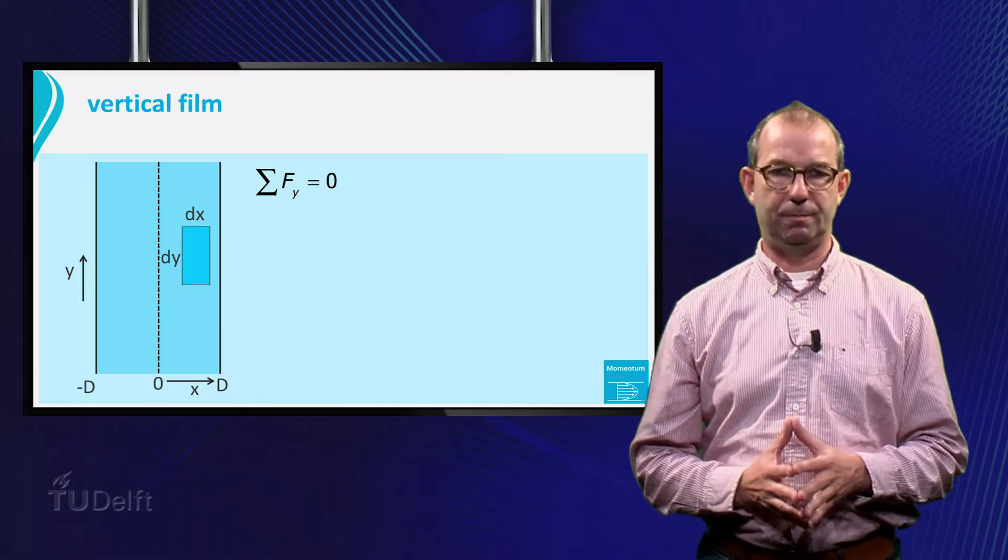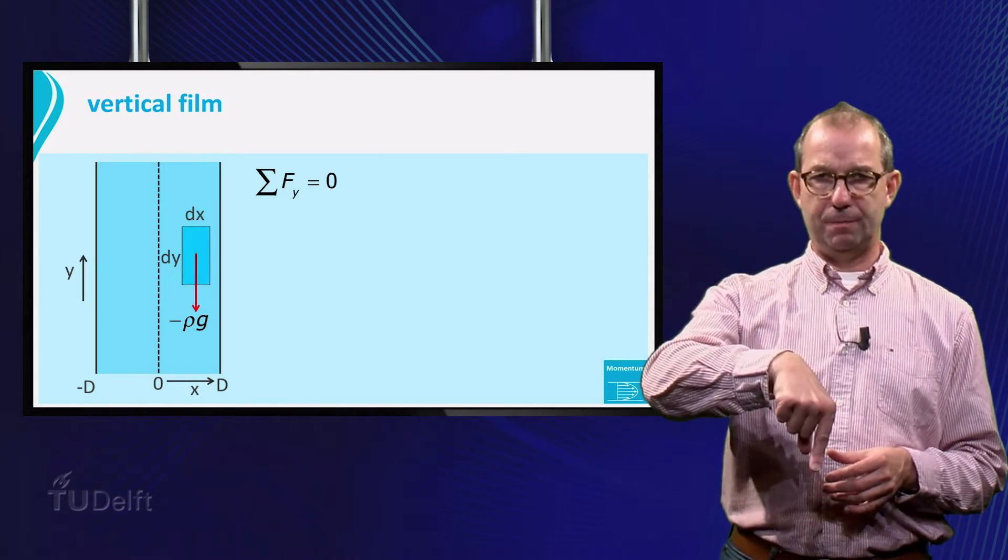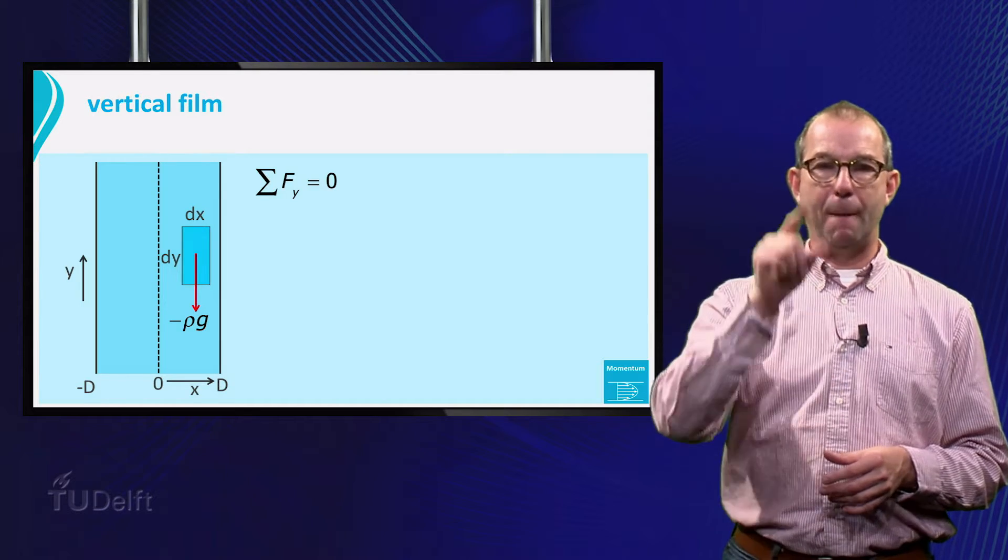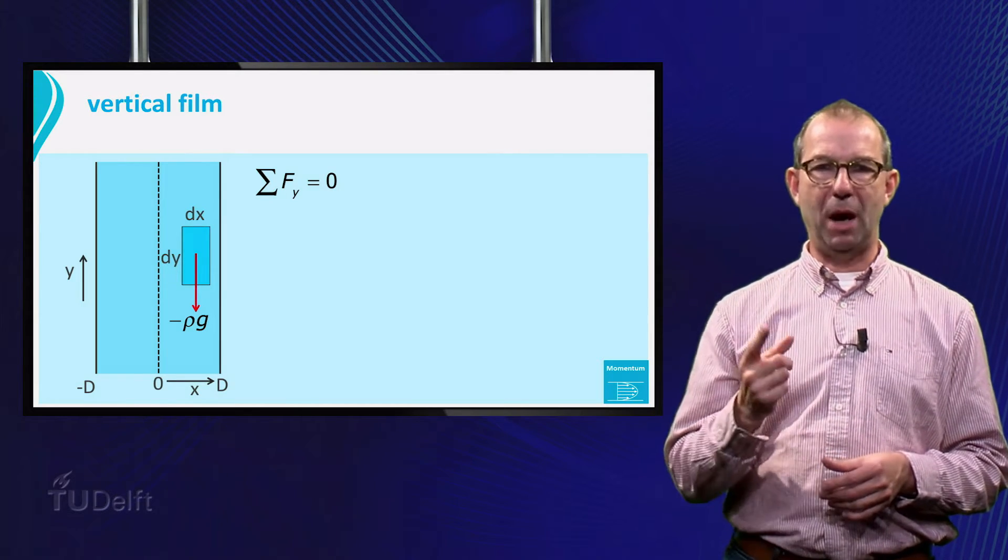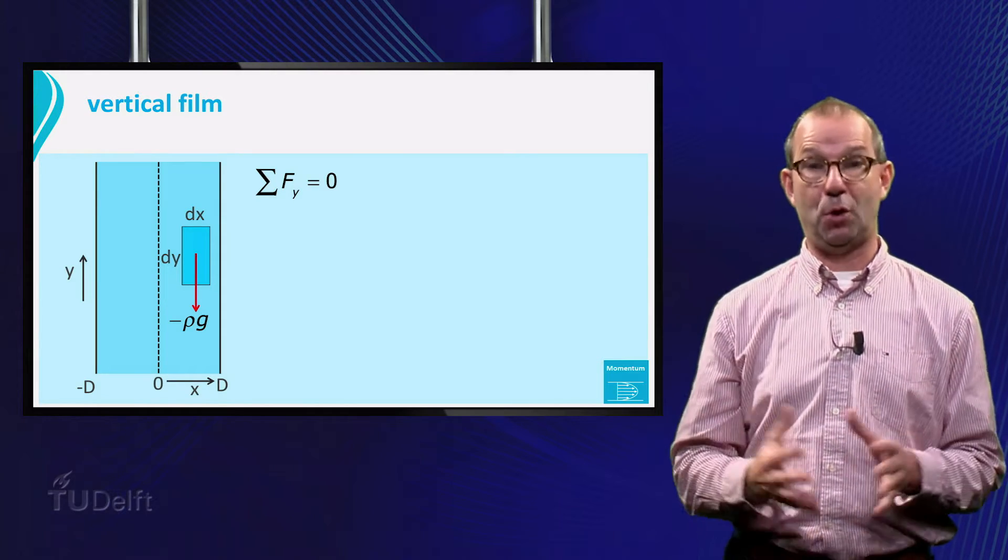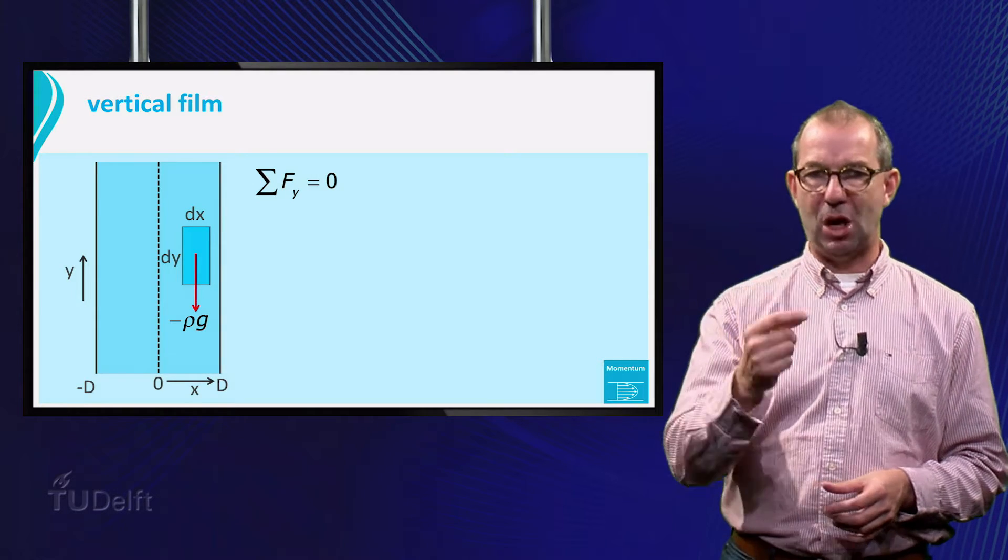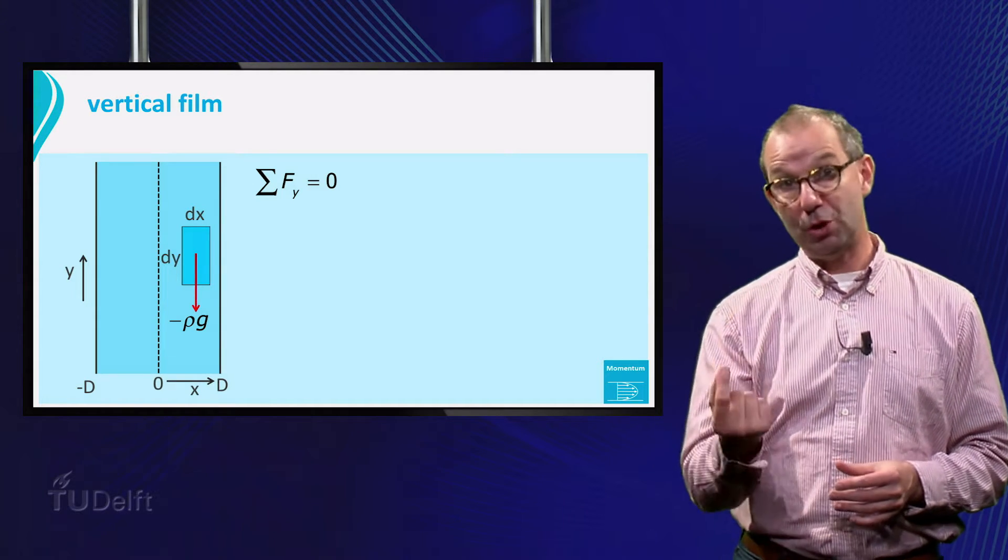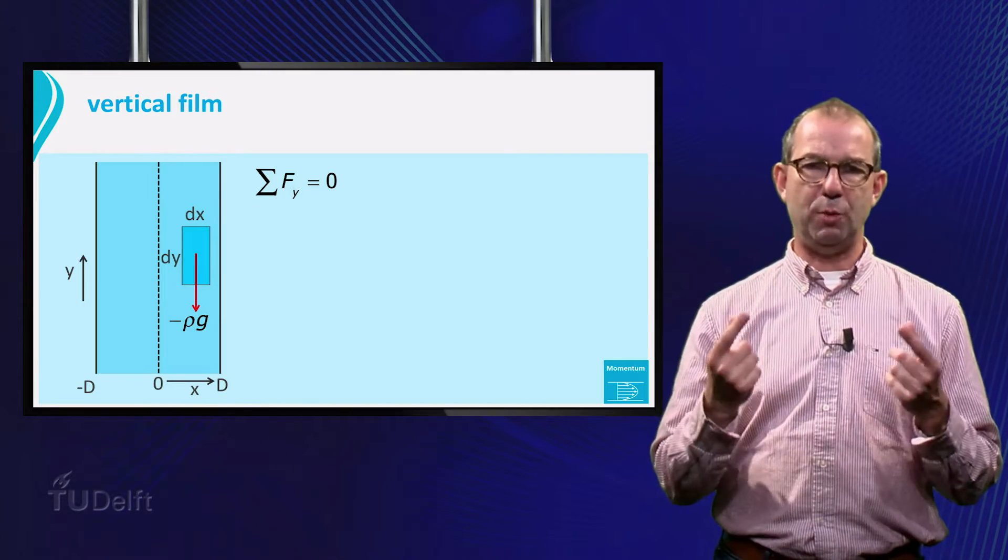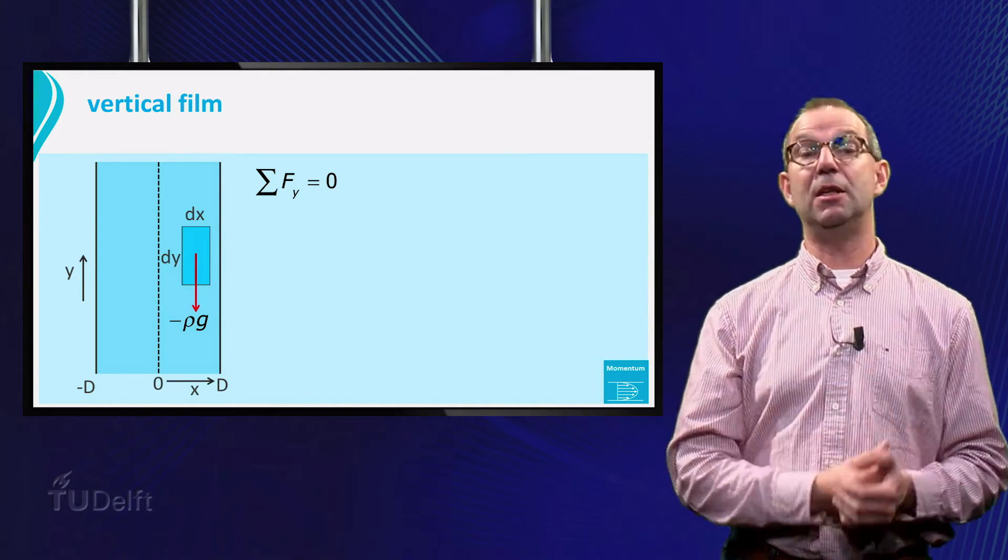Let's draw the forces. First gravity pointing downwards. Note that we write down minus rho g. The minus sign is because gravity works in the negative y-direction, and g is a positive constant. Secondly, we don't write m times g, but rho times g. That is because we want to have the volume of our control volume explicitly in the equation.